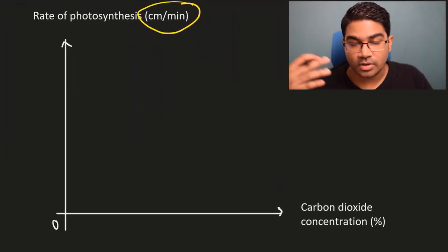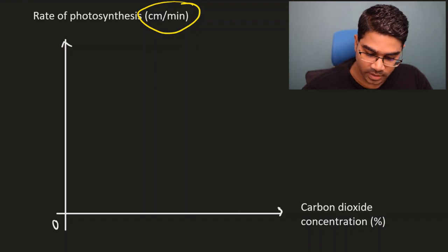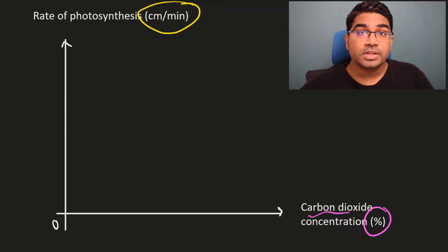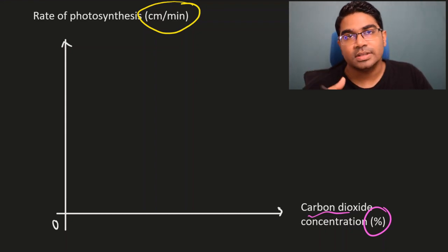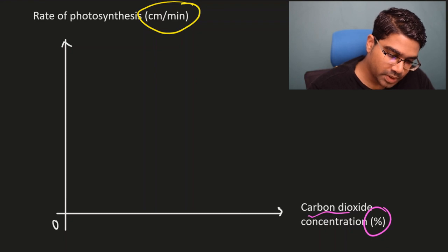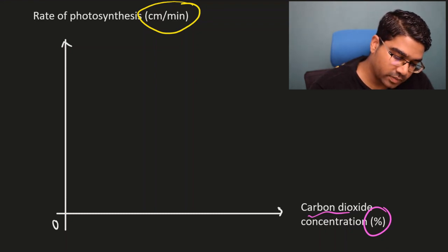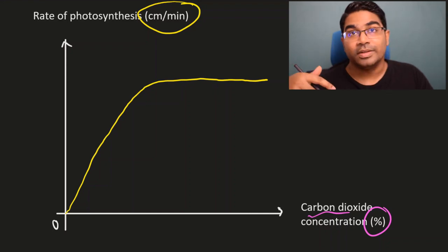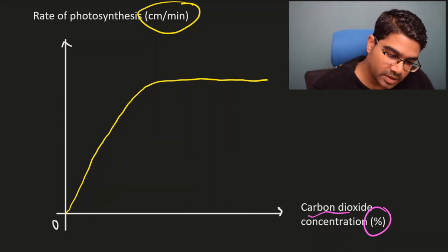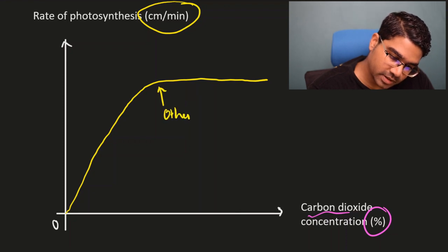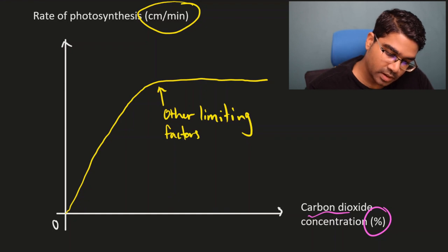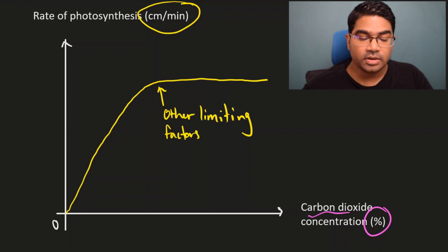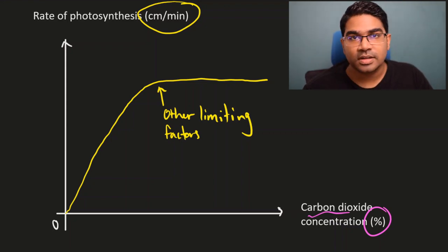When the concentration of carbon dioxide is zero, the rate of photosynthesis is zero. As carbon dioxide concentration increases, the rate of photosynthesis also increases. However, at some point it starts to plateau due to other limiting factors — namely light intensity. At a certain light intensity, the maximum rate of photosynthesis that can be achieved is fixed. Similarly, as light intensity increases, the rate of photosynthesis increases until it plateaus because carbon dioxide concentration becomes the limiting factor.